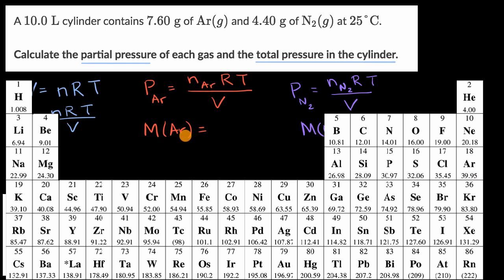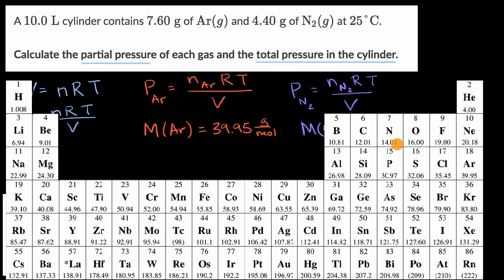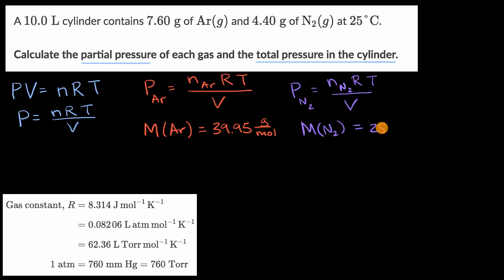A mole of argon will have a mass of 39.95 grams per mole. For molecular nitrogen, we look up nitrogen and see an average atomic mass of 14.01. We might be tempted to say the molar mass of molecular nitrogen is 14.01 grams per mole, but we must remind ourselves that molecular nitrogen is made up of two nitrogen atoms, so the molar mass is twice that — 28.02 grams per mole.